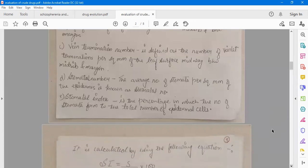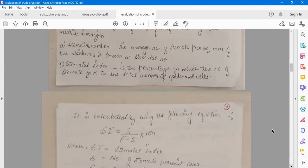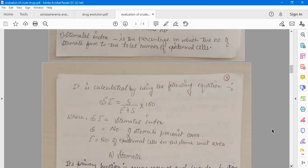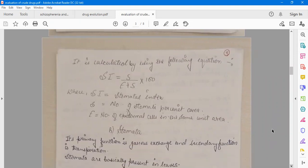Stomatal number: the average number of stomata per square millimeter of the epidermis is known as stomatal number. The stomatal index is the percentage in which the number of stomata form to the total number of epidermal cells. It is calculated by using the following equation: stomatal index equals stomata upon epidermis cell plus stomatal number into hundred.